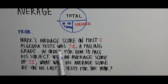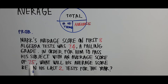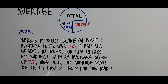In order for him to pass the algebra subject, he needs to have an average score of 75 for the whole year. There are two more tests to take for the year, and we need to find the average score on these last two tests in order for him to achieve an overall average of 75 so he will pass the subject.